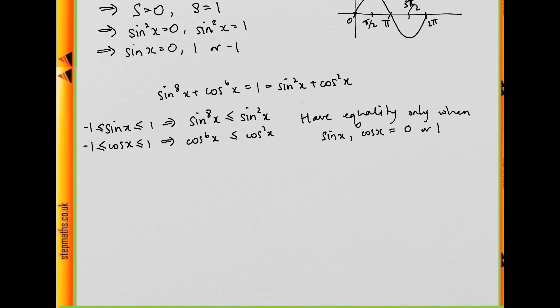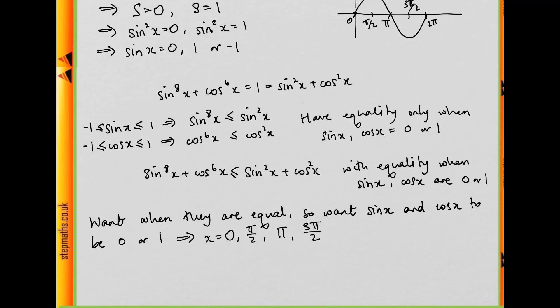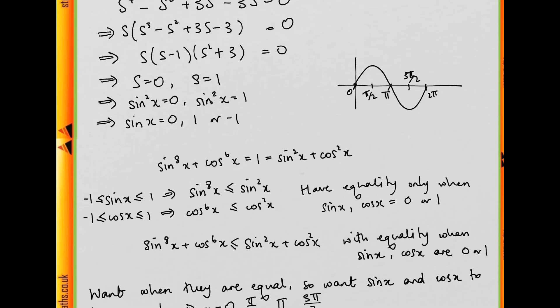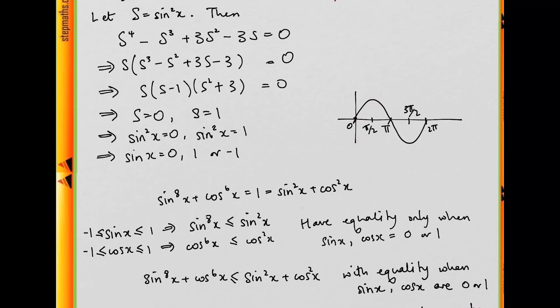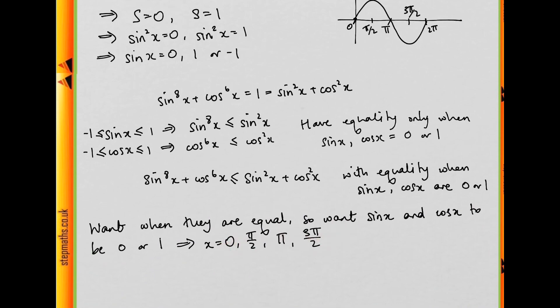Well then, that's going to mean that we have sin to the 8 plus cos to the 6 is going to be less than or equal to sin squared plus cos squared, and they're only going to be equal when sin and cos are 0 or 1. But we're looking for when it is equal, right? So, essentially, we want sin and cos to be either 0 or 1, and that's going to happen when x is 0, π over 2, π, or 3π over 2, which are the same values that we got before. And so we see that we still have four solutions.